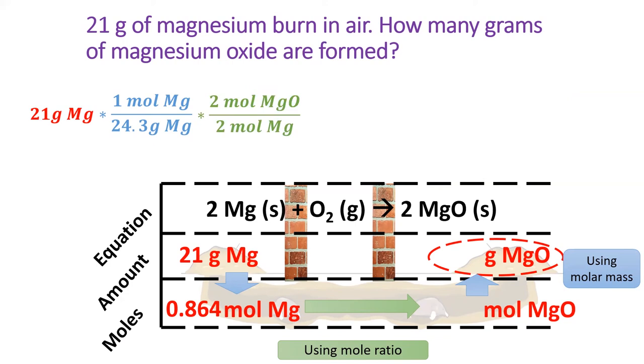Next, we'll use the mole ratio to convert from magnesium to magnesium oxide. Looking at our chemical equation, it takes 2 moles of magnesium to form 2 moles of magnesium oxide. This step is why the balanced chemical equation is essential to stoichiometry.